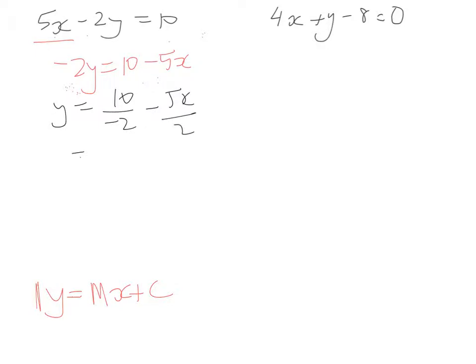So now this is going to become 10 over negative 2 is negative 5. And that's got to be a negative as well. Negative 5 divided by negative 2 gives us plus 5 over 2x. And we rewrite it as mx plus c. So y equals 5 over 2x minus 5 over here.